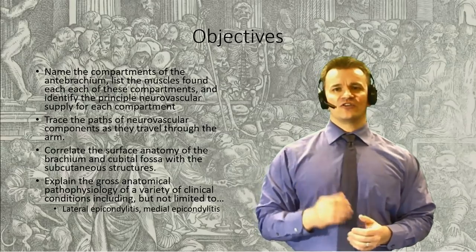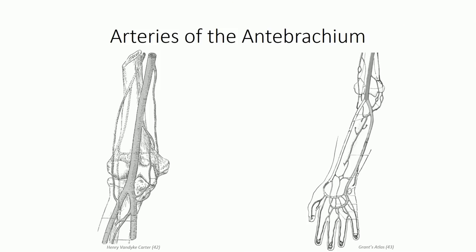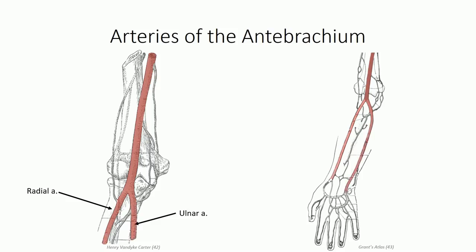Let's start with a look at the arterial supply to the forearm. In the brachium, we observe the path of the brachial artery and the collateral branches it supplied. In the distal portion of the cubital fossa, the brachial artery divides into two large vessels of the antebrachium, which are named according to the bones they run in proximity to: the radial artery with the radius and the ulnar artery with the ulna. Both can be found in the anterior compartment, where they supply the vasculature to the lateral and medial aspects of the compartment, respectively.